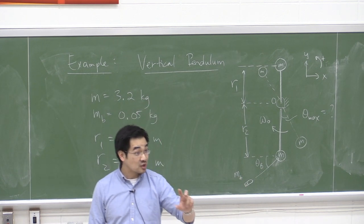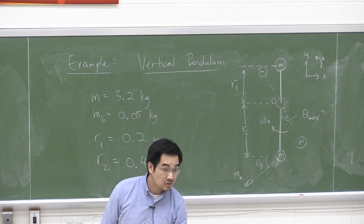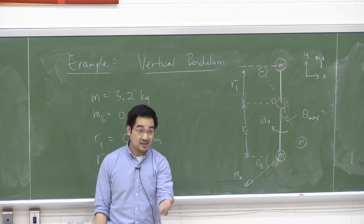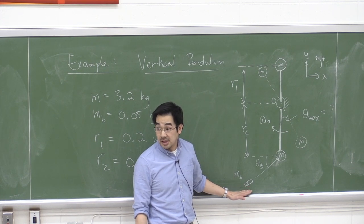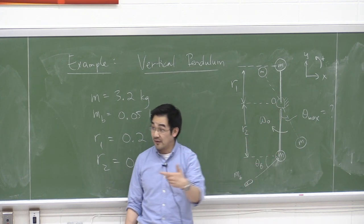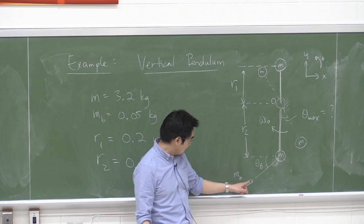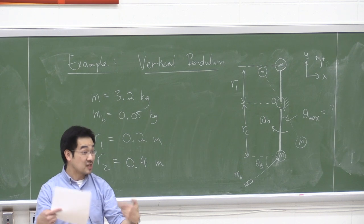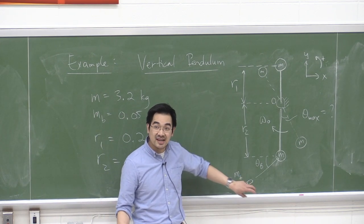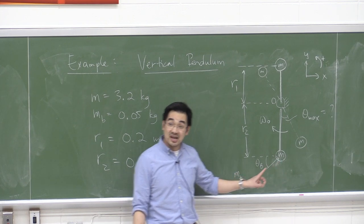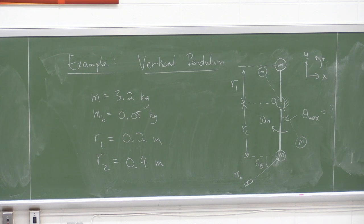Let's try conservation of angular momentum instead. The bullet itself has linear momentum m_b v_b, and since it's a distance r₂ from O, it has angular momentum. If we include the bullet as part of the system, then the impact force between bullet and mass is internal to the system — the forces cancel. The whole key is recognizing that the bullet creates an internal moment if included in the system.